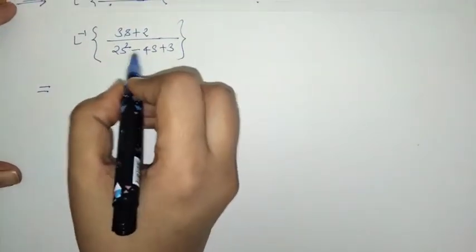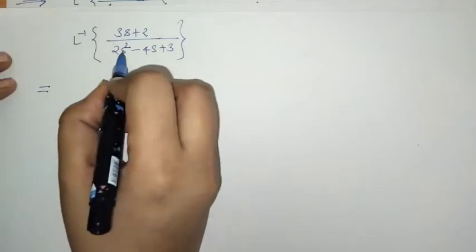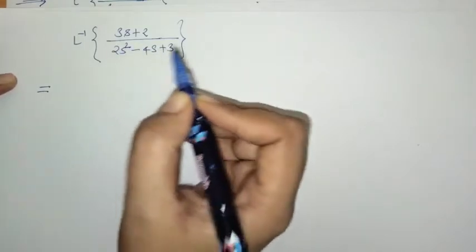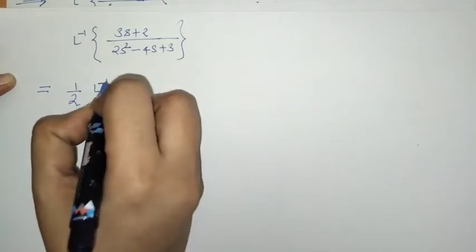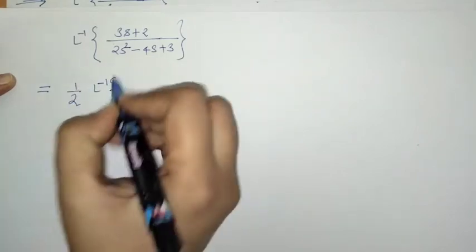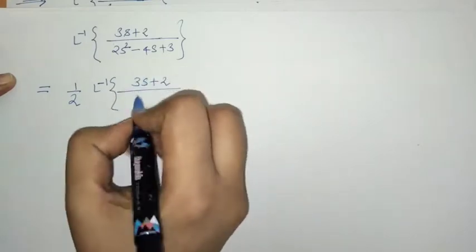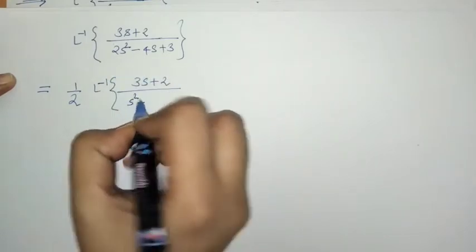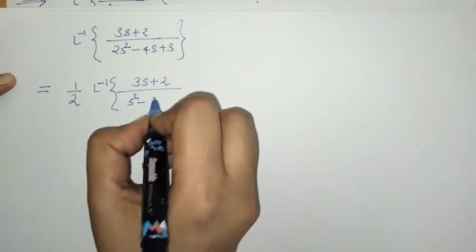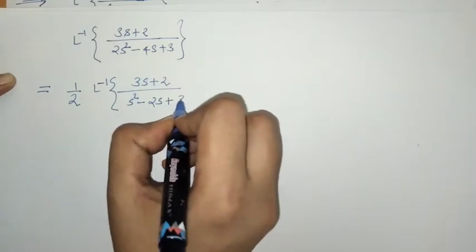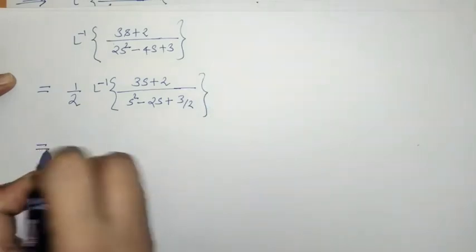For making a perfect square, the coefficient of s² must be 1. So we take 1/2 outside. When we take 1/2 common from the denominator, we get: s² − (4/2)s + 3/2, which is s² − 2s + 3/2.